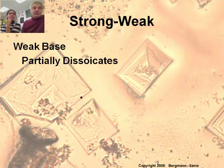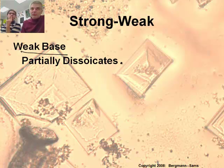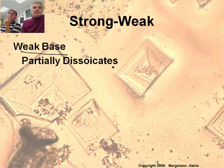One characteristic of a weak base is that it partially dissociates. Now these are kind of weird, and we should talk about that because most weak bases are actually not hydroxides. There are a few, like your Group 2 hydroxides — say magnesium hydroxide. Well, let's do one of those first.